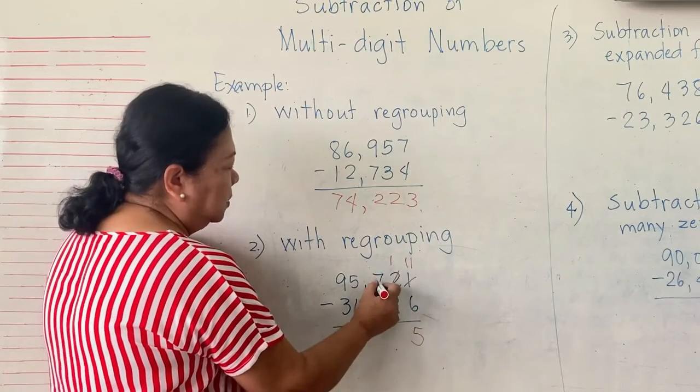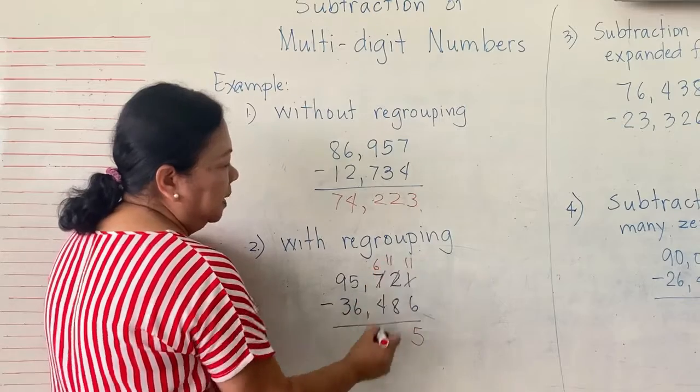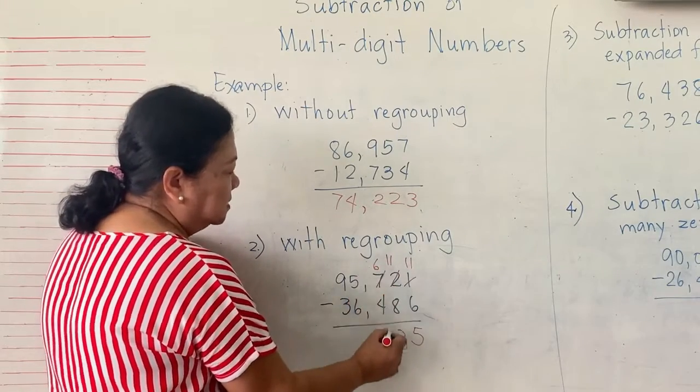1 minus 8 cannot. It will borrow 1 from 7. 7 becomes 6. This one becomes 11. 11 minus 8 is 3. 6 minus 4 is 2.